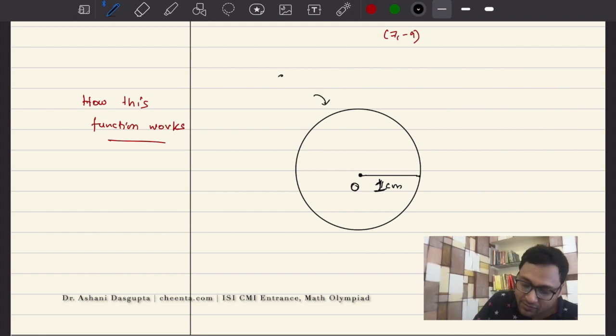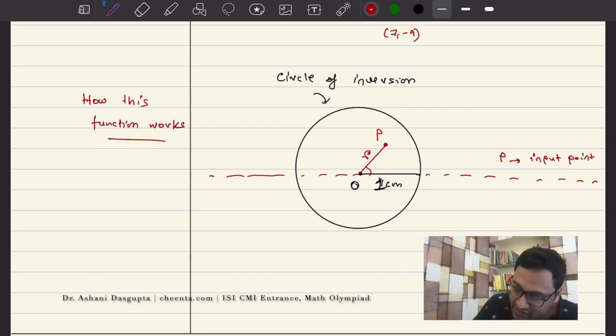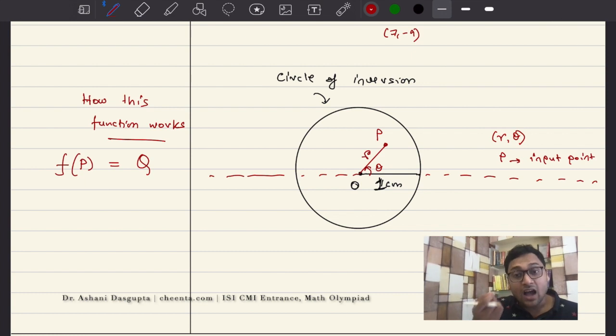Suppose you take a point here. Suppose this point P is your input point. You can think of this as the x-axis. And you can join OP to write down the polar coordinates of P. That means the distance of P from the origin, which is R, and the angle that it makes with the x-axis, which is theta. So suppose P is (R, theta).